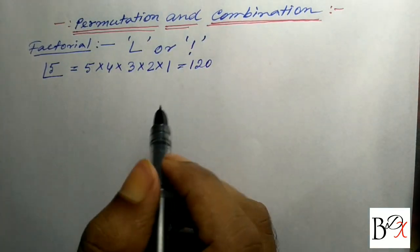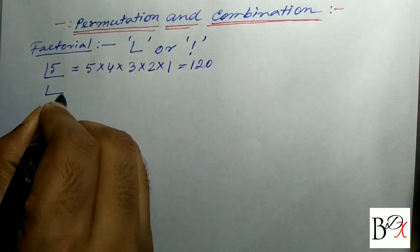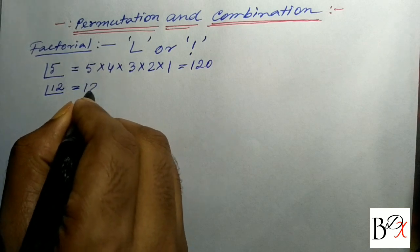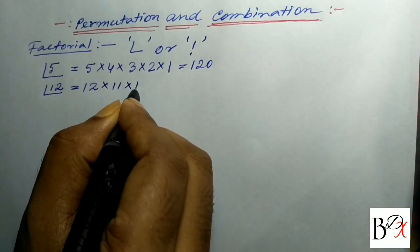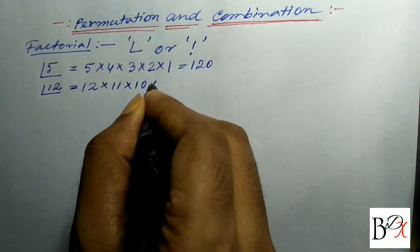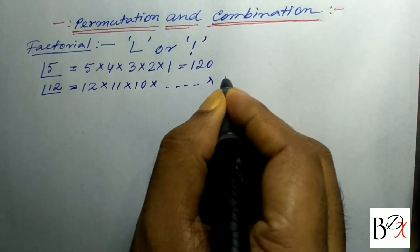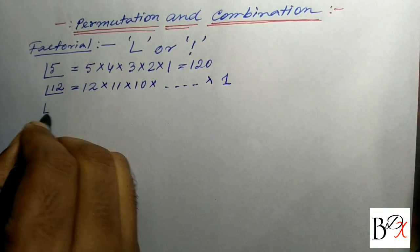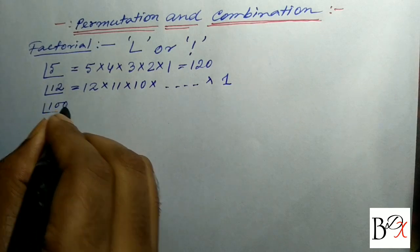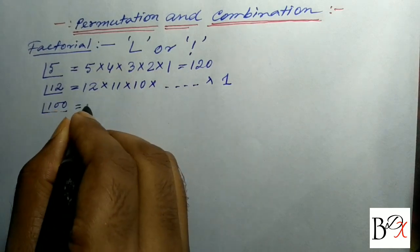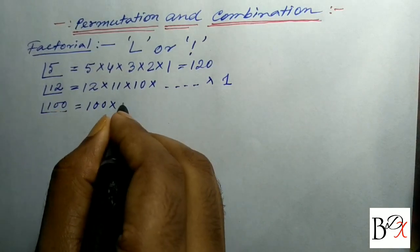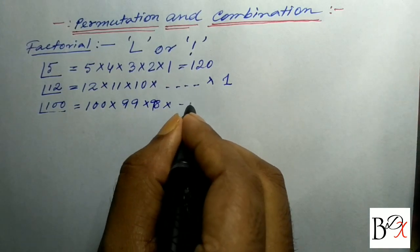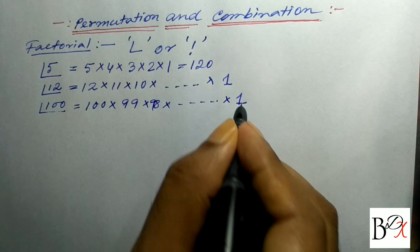Suppose factorial 12. Factorial 12 is equal to 12 into 11 into 10 into dot dot dot up to 1. Suppose factorial 100. Factorial 100 is equal to 100 into 99 into 98 into dot dot dot up to 1.